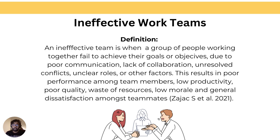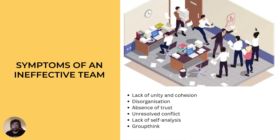So, what is an ineffective work team? Zajac's paper on overcoming challenges to teamwork defines ineffective teams as a group of individuals who are unable to work together to achieve their goals or objectives. Ineffective work teams are a bad work practice, as they lead to a toxic work environment and inefficiency. Prolonged effects could lead to a loss of income and impact the company's business. To overcome this, managers could look for the following symptoms of ineffective teams to come up with strategies to build effective teams.